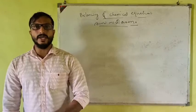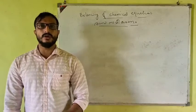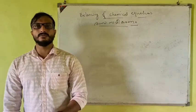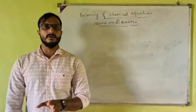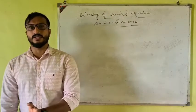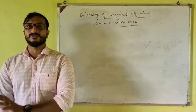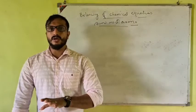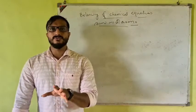In a chemical reaction, the total number of atoms on the reactant side must be equal to the total number of atoms on the product side. This is the law of conservation of mass.